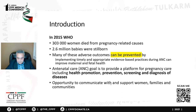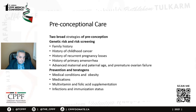Antenatal care starts with pre-pregnancy or pre-conceptional care. There are two main strategies: the first is to screen for the risk of genetic disease and to prevent teratogenicity. Screening is done by taking a detailed family history, history of childhood cancer, recurrent pregnancy losses, primary amenorrhea, advanced maternal and paternal age, and history of premature ovarian failure. Prevention of teratogenicity is done by counseling about medical conditions such as diabetes and obesity, and reviewing medication safety during pregnancy.